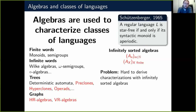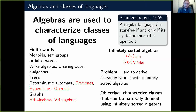It is hard to derive characterizations with infinitely sorted algebras. This is not an a priori statement — it's just what experiments show. We don't have many such results, or the ones we have are simple results. Our objective with complexity is to characterize classes that can be naturally defined using infinitely sorted algebras.